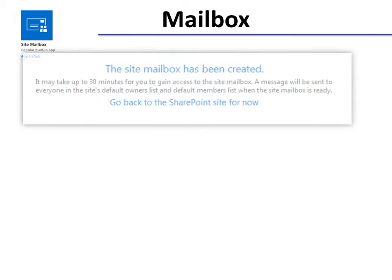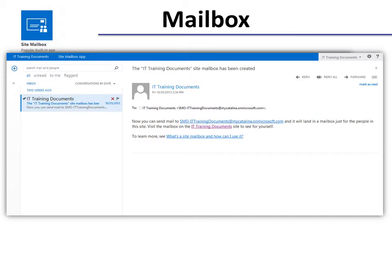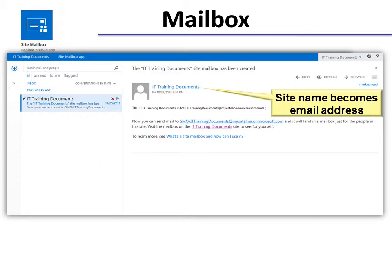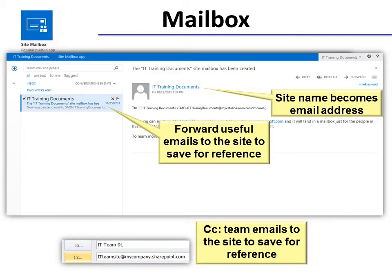The site mailbox: when you hit Create, it says it's been created, but it takes a while — it warns you that it could take up to 30 minutes. It gives you the option to go back to the SharePoint site while you're waiting. When you go back to it again, it'll ask you which your preferred language is and the time zone, then Submit Query. When you open it, there's your mailbox. The name that you gave it becomes the email address, so make sure you name it appropriately based on what you want the email address to be. You would probably want to forward useful emails to the site to save for reference. That's the purpose — not to be a main mailbox, but a location for storage for mail you don't want to administer in your Outlook. You can also CC emails to the site to save for reference, or even put the address in a distribution list. It's a good way to save emails without clogging up a person's email inbox.